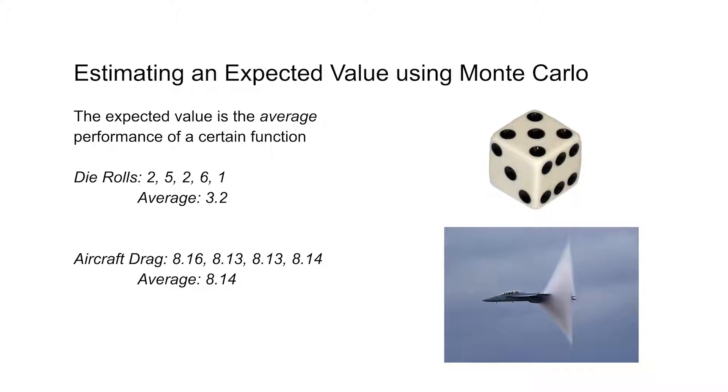Now this is also used for other systems. For example, let's say we have an airplane and we want to know the average drag on this airplane. Airplanes are really finely tuned to behave well under a variety of conditions. So maybe when we flew our airplane four times, we found drag values of 8.16, 8.13, 8.13, 8.14, finding an average value of around 8.14.